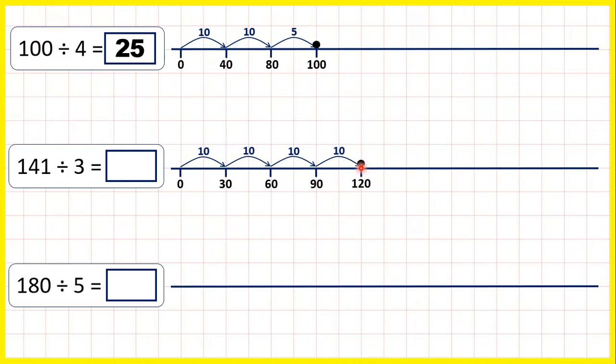But here, if we jumped another 10 lots of 3, that would take us to 150, which would be too many. So we need to jump in something smaller. Now 5 times 3 is 15. So if we jump 5 times 3, we can add 15 to 120.